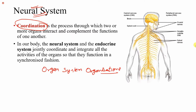Coordination means a process in which two or more organs interact with each other and their functions complement one another. Our body has a whole structure with different types of systems present in a coordinated manner. We should understand this first.